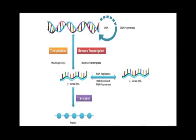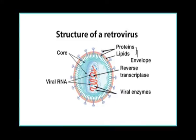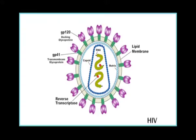Some of these riboviruses undergo reverse transcription in the host cell to form DNA. Such riboviruses have been given the name retroviruses. The word 'retro' stands for reverse transcription. Transcription is the formation of RNA from DNA; reverse transcription is the formation of DNA from RNA. Those viruses which are able to form DNA from their RNA are called retroviruses. The best example is HIV.